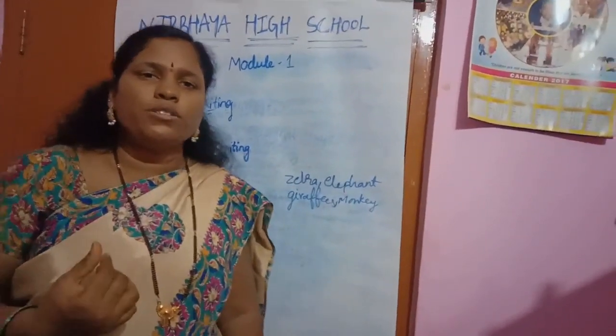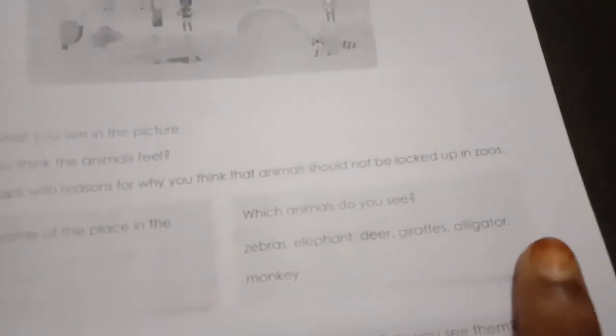Now I will show you the creative writing answers. What is the name of the place in the picture? A zoo. Which animals do you see? Zebra, elephant, deer, giraffe, alligator, and monkey. What are the animals doing? Zebra, giraffe, and deer are standing in closed spaces. Monkeys are hanging.